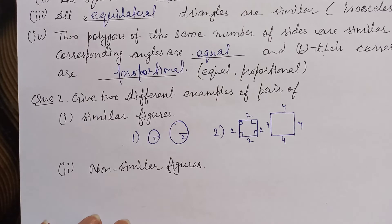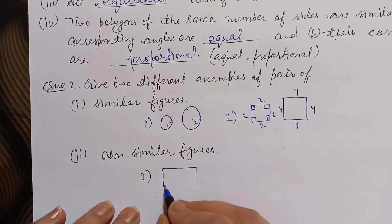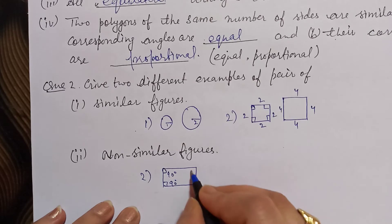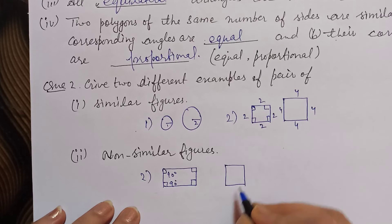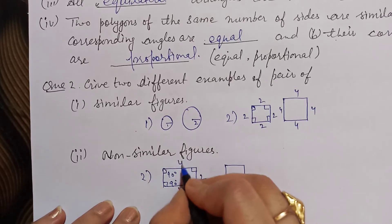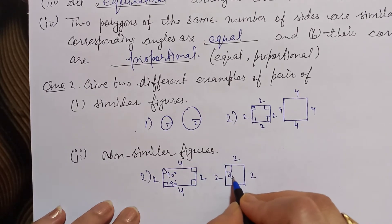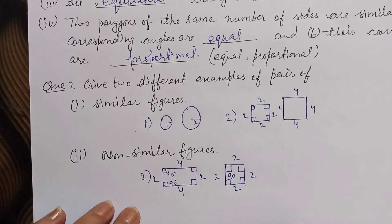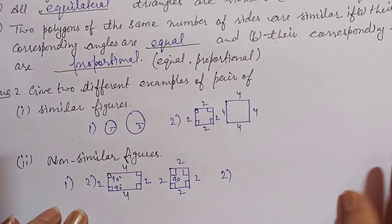Now for non-similar figures. First example: a rectangle and a square. The rectangle has angles of 90 degrees, and the square also has 4 angles of 90 degrees with side 4. But for the rectangle, sides are 2 by 2 — the angles are equal but the sides are not in proportion, so this will be a non-similar figure.